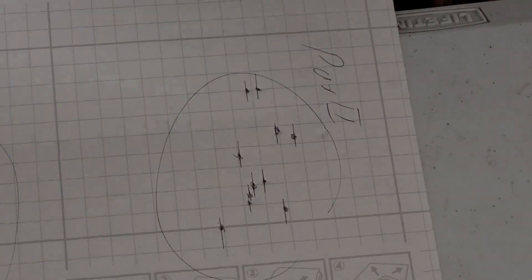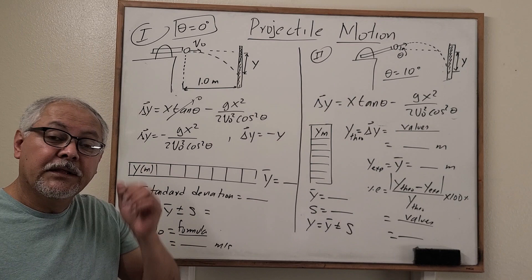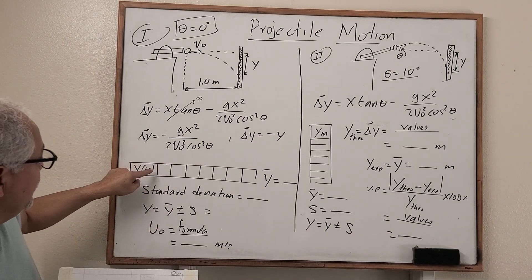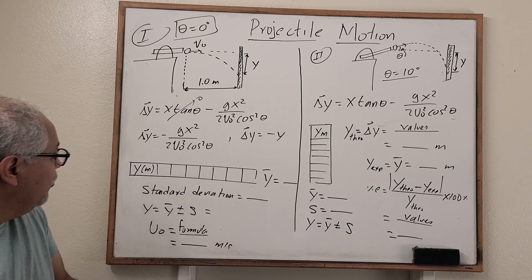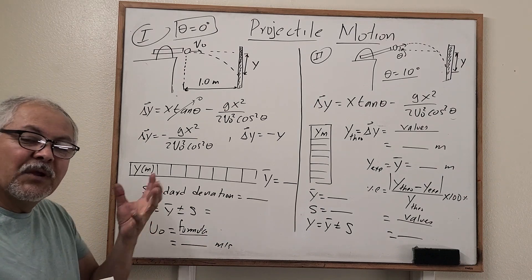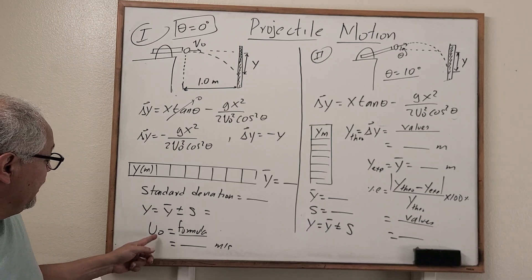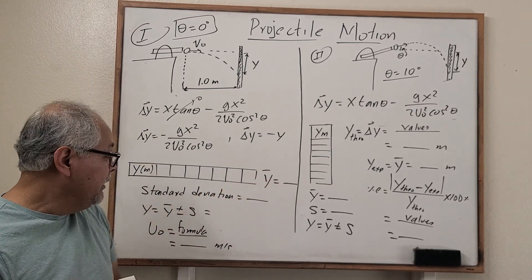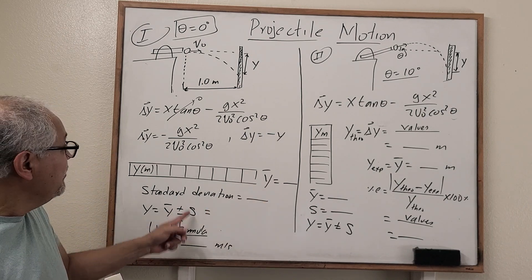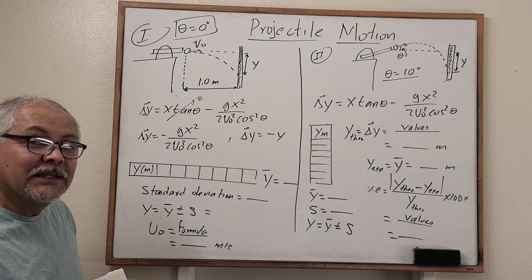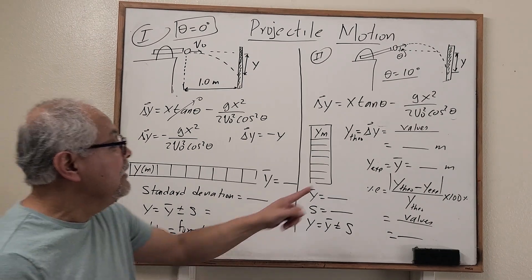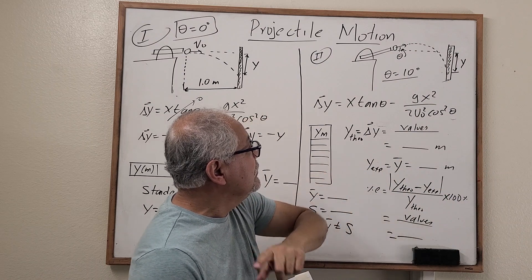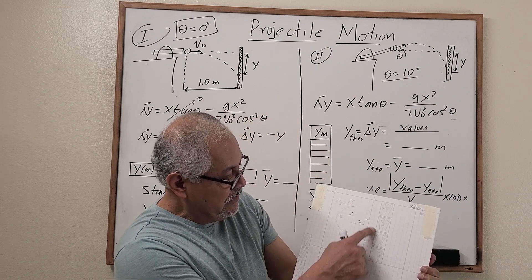We are done with the experiment. The measurements from the impact — this is part one, case one — are in this column. Let's find the average and standard deviation, and represent the quantity as average plus or minus standard deviation. Let's find v-naught from the equation using the average value for delta y. Show the formula, use the values, and solve for v-naught. Then use this initial velocity in the formula for the 10-degree case.